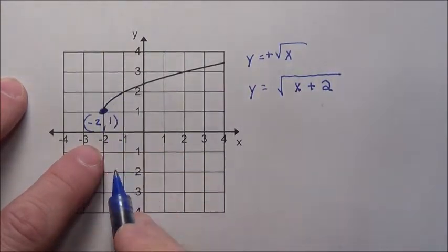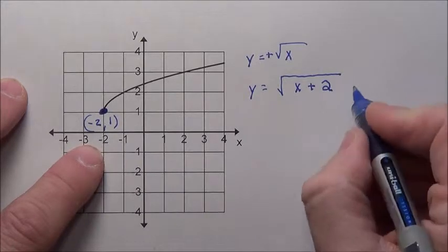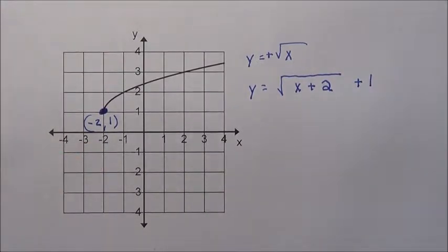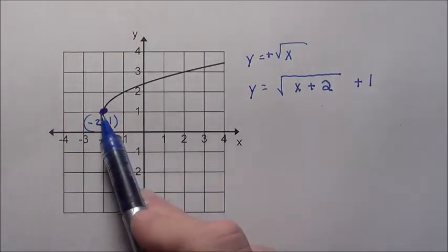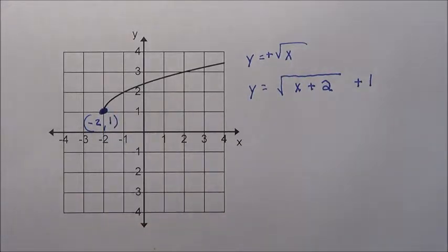And then how did it slide vertically? It moved up 1. So on the outside of that square root, I simply put plus 1. And there, this is what we have graphed. y equals the square root of x plus 2 plus 1.